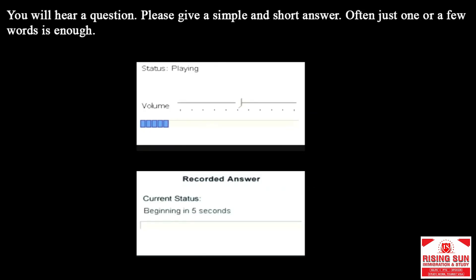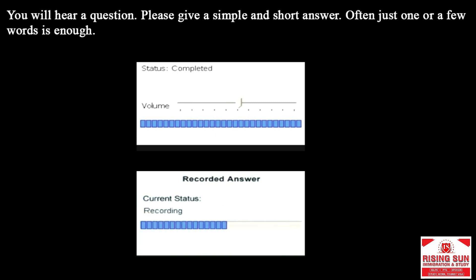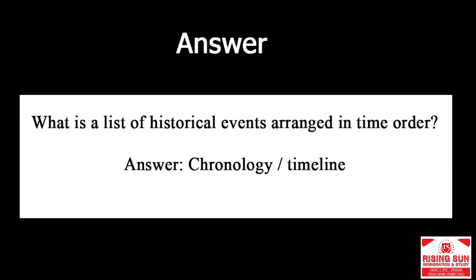What is a list of historical events arranged in time order? Answer: chronology, timeline.